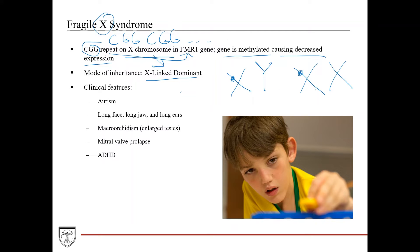We'll go through the X-linked dominant inheritance pattern in more detail in that lecture. Clinical features include autism and very characteristic facial features often described in question stems: a long face, long jaw, and long ears — as seen in this picture of a boy with Fragile X who has a long ovoid face, larger ears, and a long jawline. In boys, they'll also have macroorchidism, which is enlarged testes. These patients can also have mitral valve prolapse and ADHD, tying back to that neurobehavioral dysfunction.